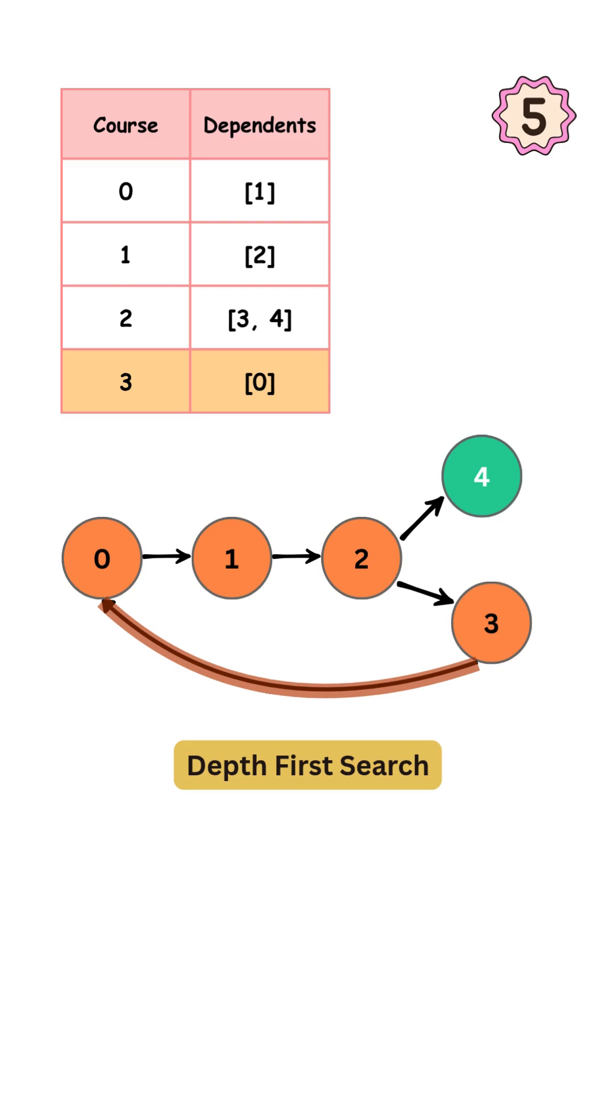It is still in the process of being explored. Anytime we encounter an orange node during traversal, it means we are revisiting a node in the current path. This indicates a cycle, and so the answer is false.